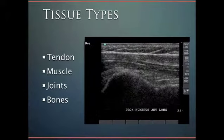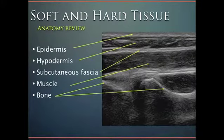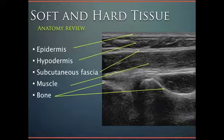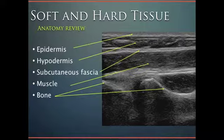The different types of tissue we can see on ultrasound in those first few centimeters include tendons, muscle, joints, and bones. There is soft and hard tissue. Most tissue is soft, from the skin line with the epidermis down through the hypodermis or subcutaneous tissue. Then there's the subcutaneous fascia, which is that hyperechoic line. Below that we can see muscle, and finally the bone — the hard tissue.